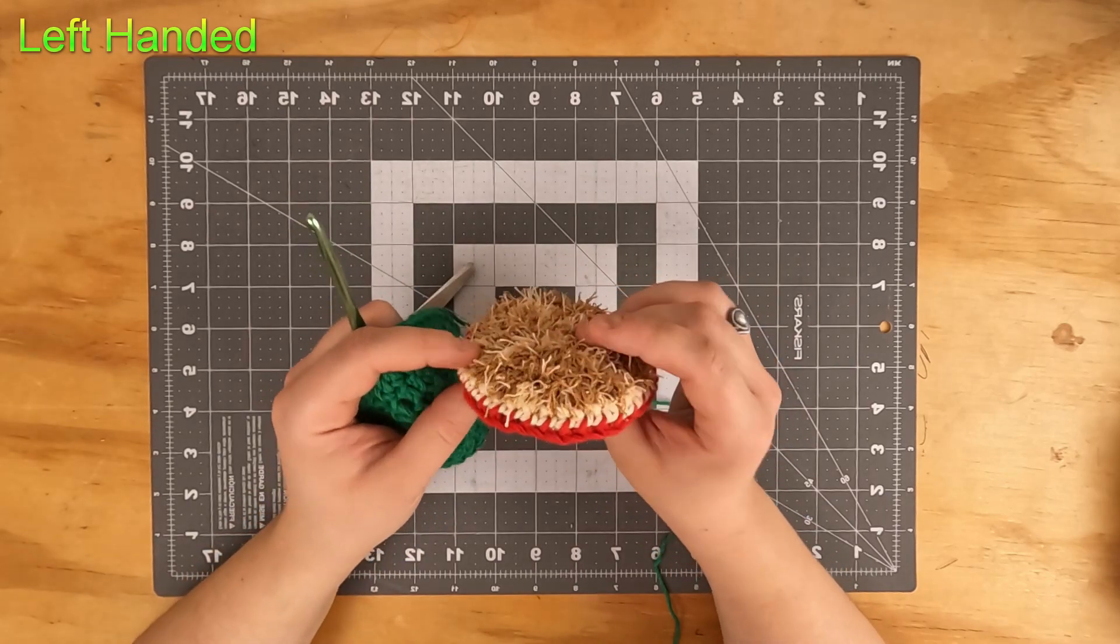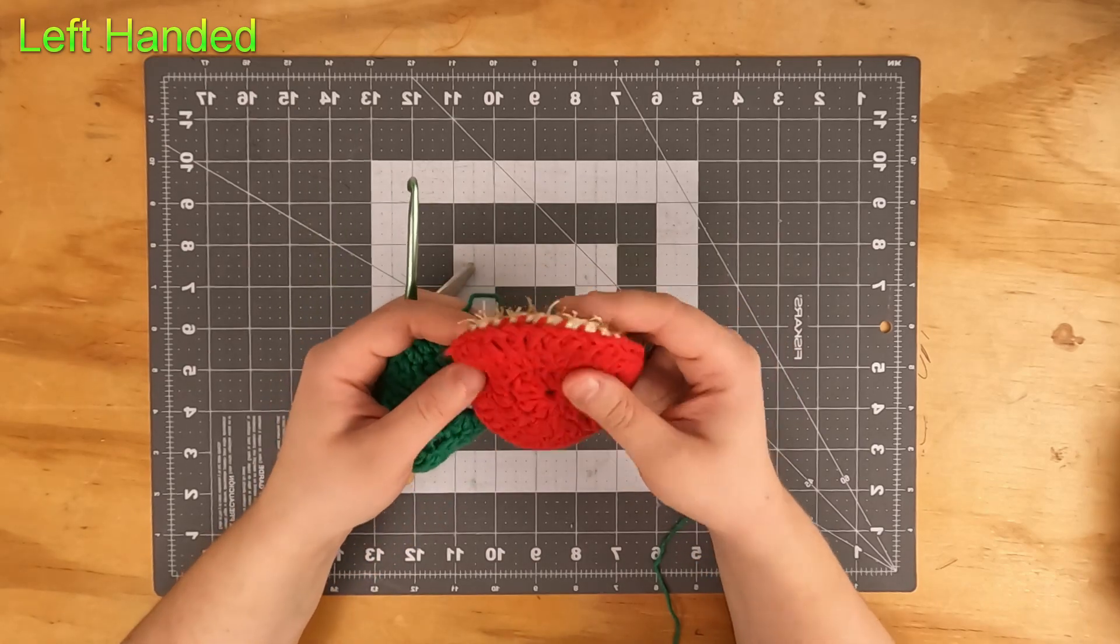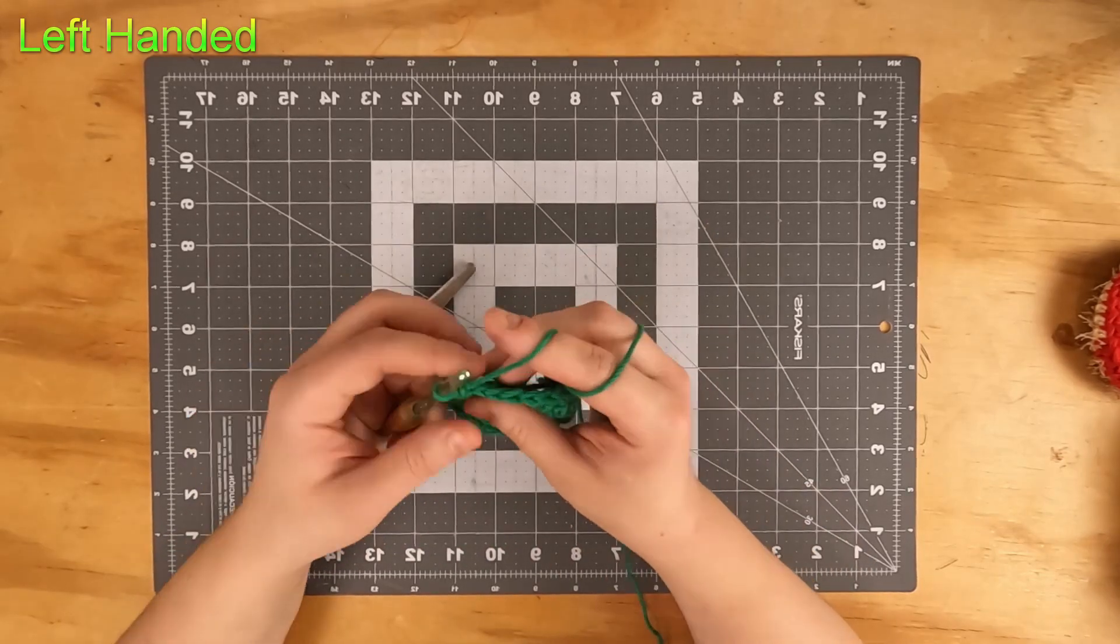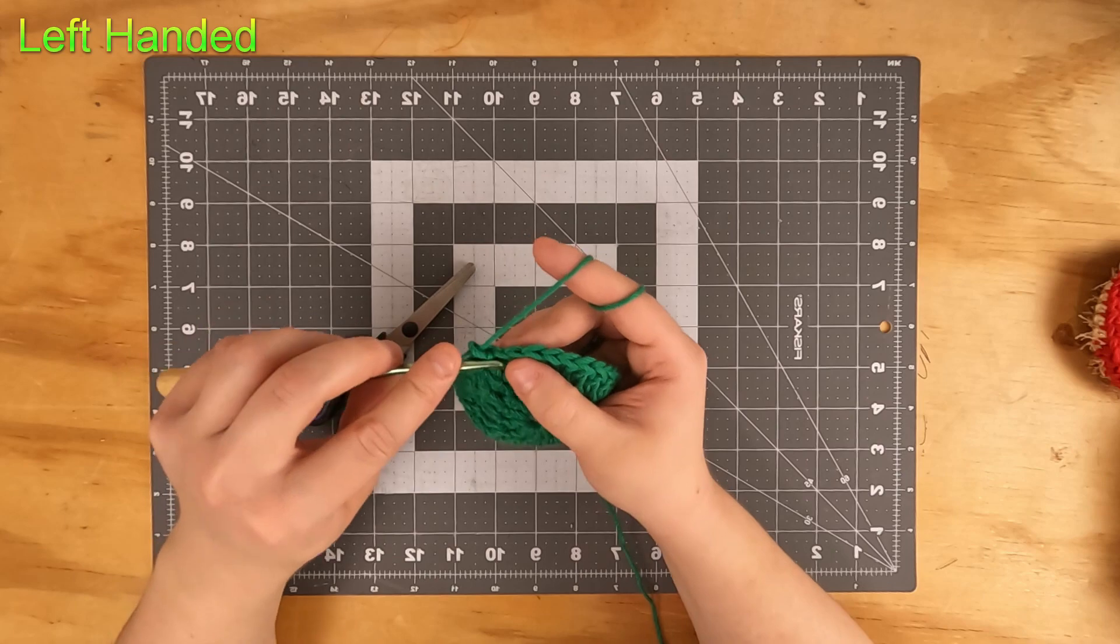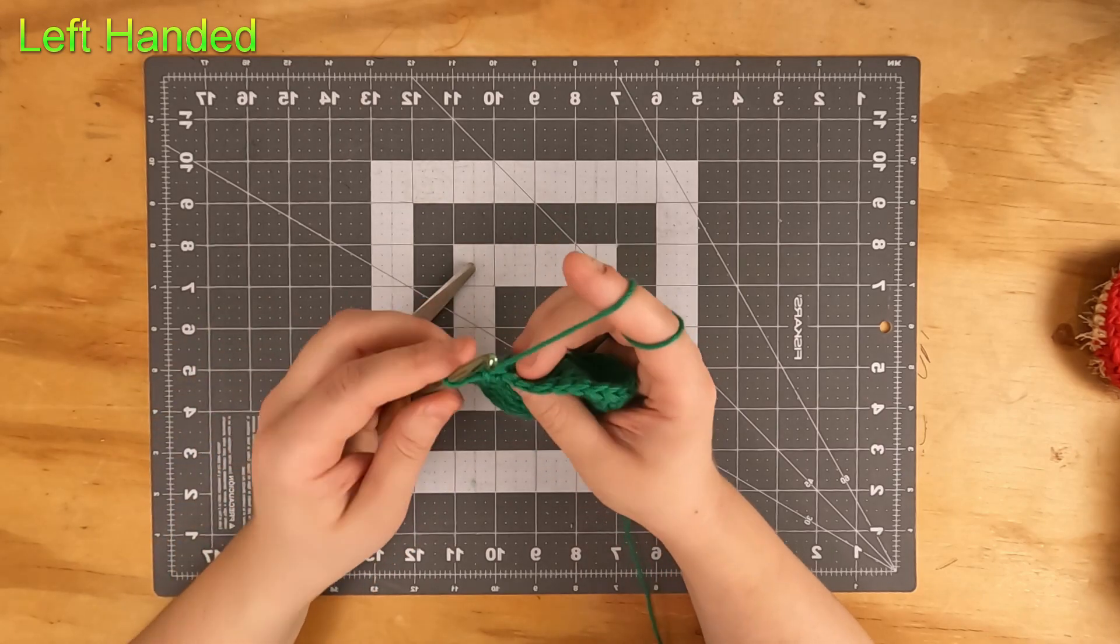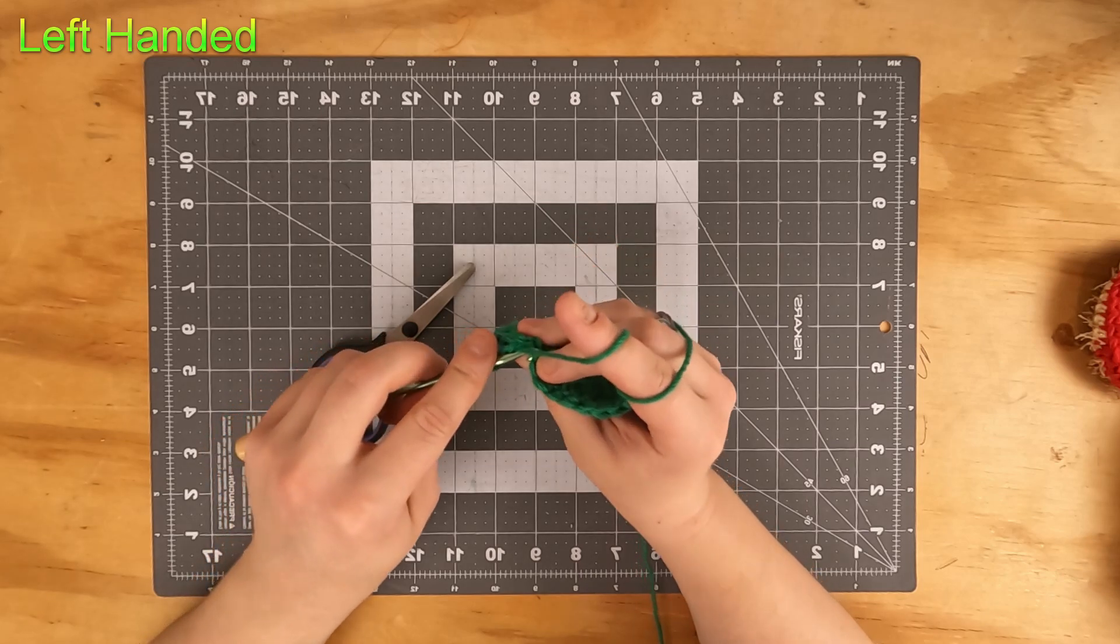To do the edge round we're actually going to do single crochets in the back loops of each of our stitches. Chain up one, and in each of your stitches, usually you're working into this entire V stitch here, but instead you're going to be inserting your hook in the middle here and then only going underneath that back loop.